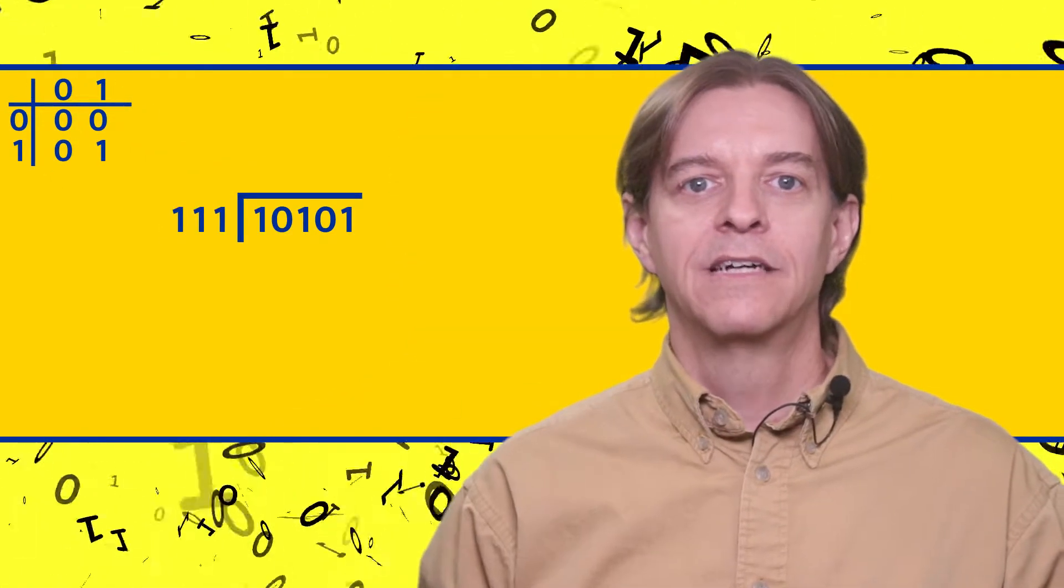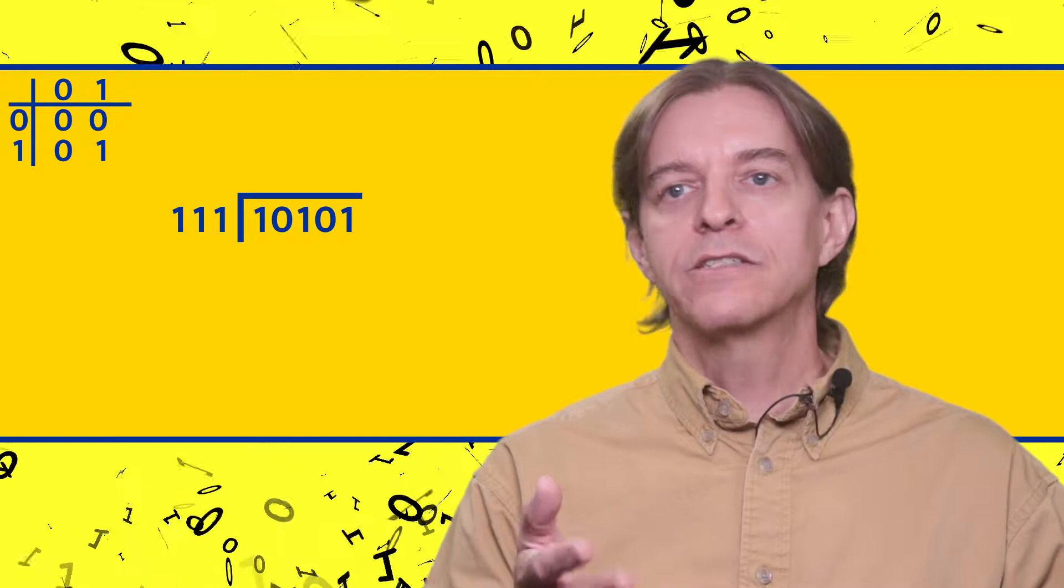Let's get into this with some examples. We'll start with 21 divided by 7. Written as long division, that looks like this.